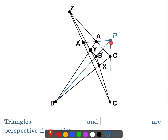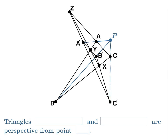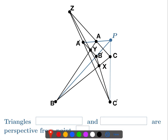We're assuming that the two triangles are perspective from a line and trying to prove they're perspective from a point. We're taking the point P where AA' and BB' intersect, and we want to show that the line through C and C' goes through P. The claim is that we should be able to do this by using Desargues' theorem — not with triangles ABC and A'B'C', but with two other triangles that are perspective from a point.